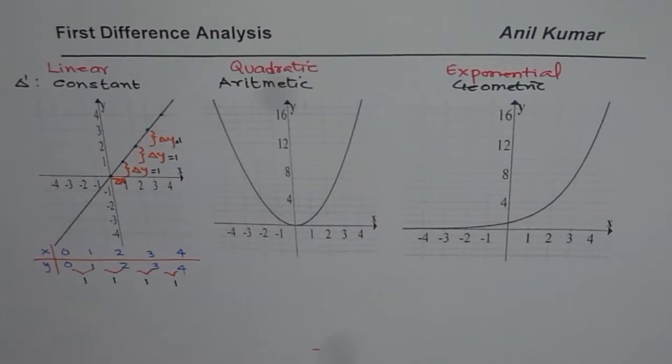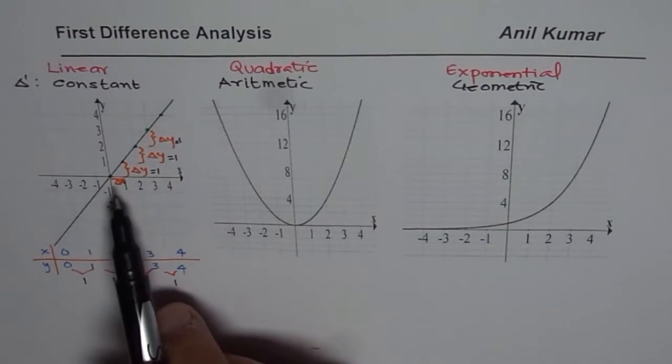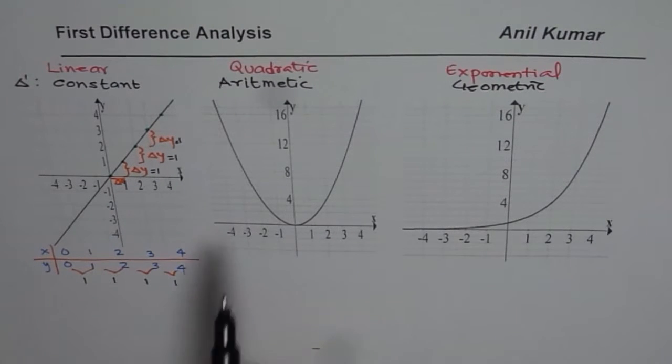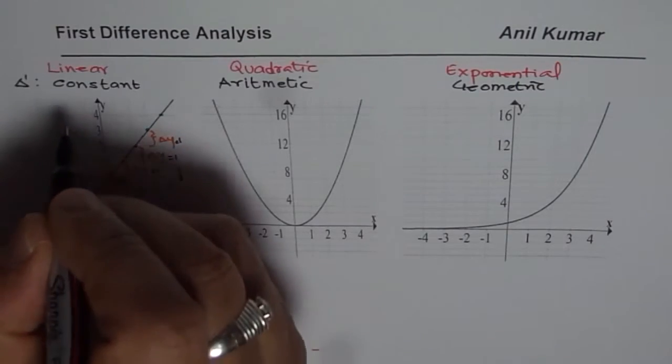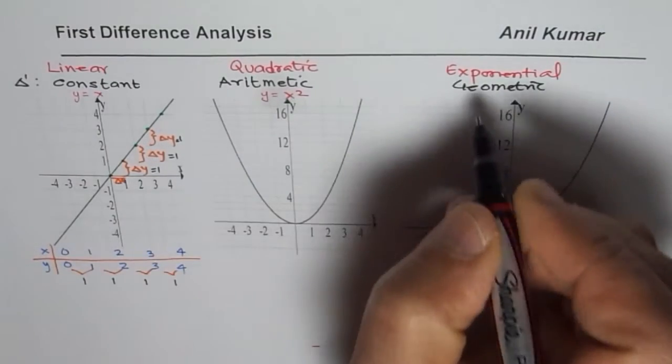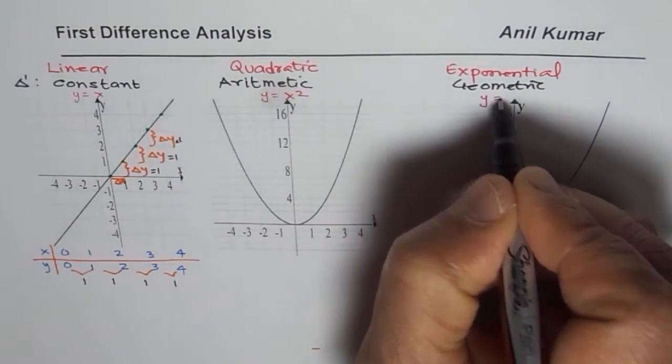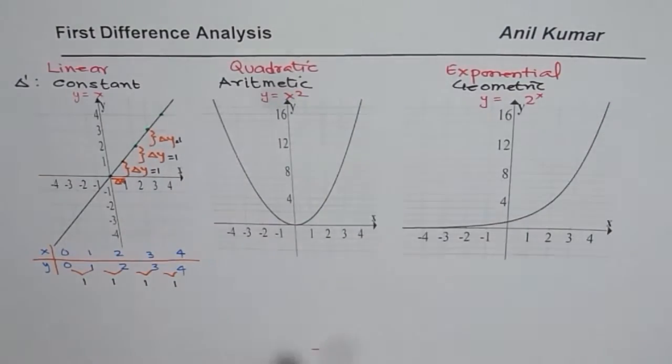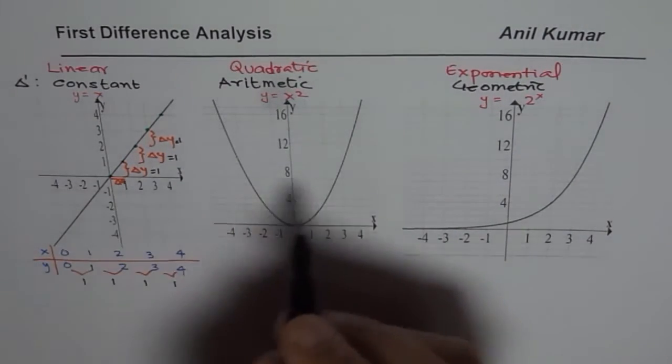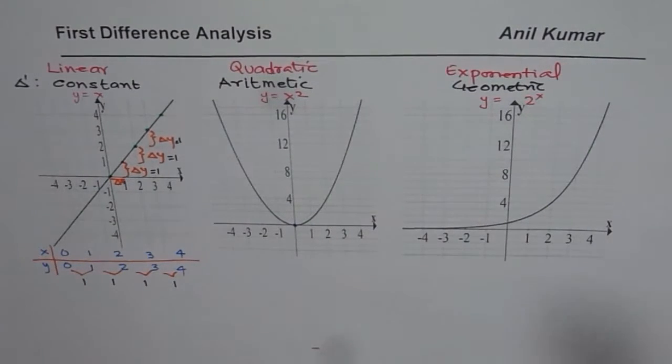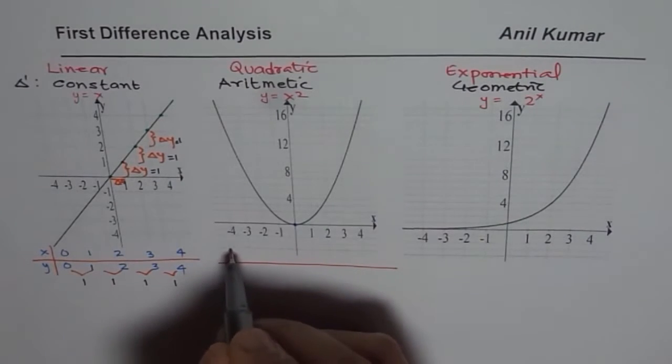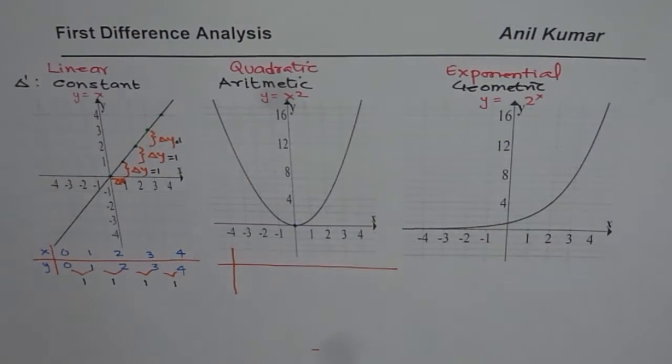I hope that is clear. So let us see this, what pattern do we see when we are talking about a quadratic function. So I have taken very simple examples. This is the graph of y equals to x. Here we have graph of y equals to x squared. And then we have a graph of y equals to 2 to the power of x. Now we will analyze the second graph and see how the first difference changes. Now let me make a table as we did earlier. So we will do both on the graph and with table of values.